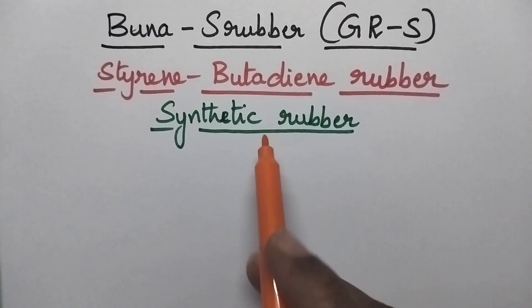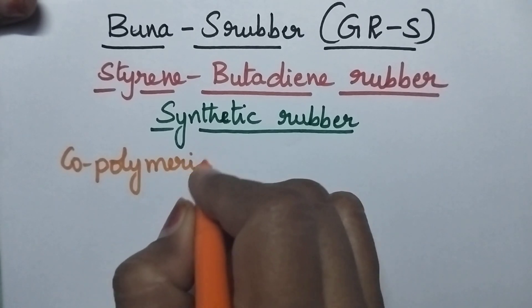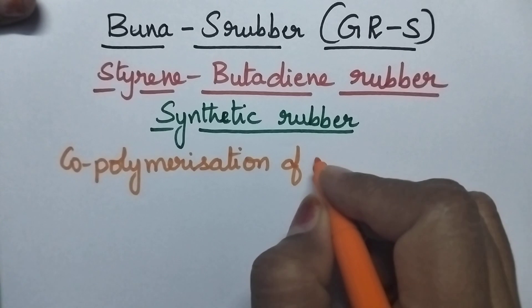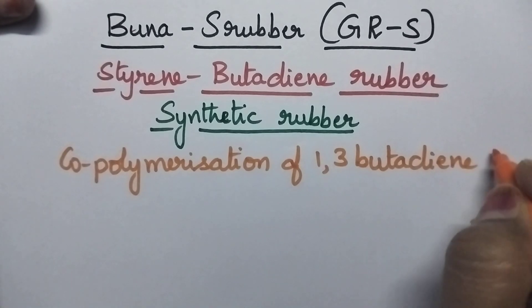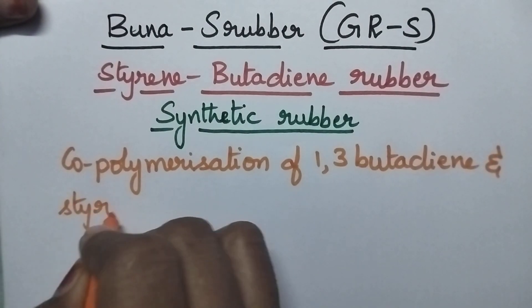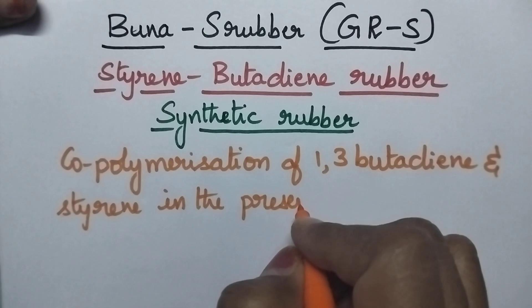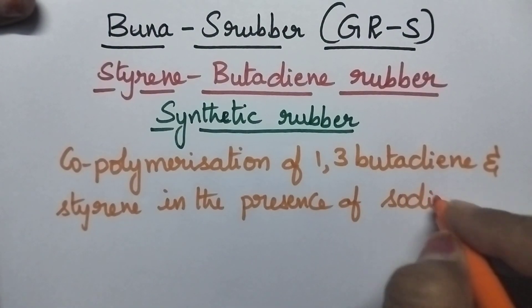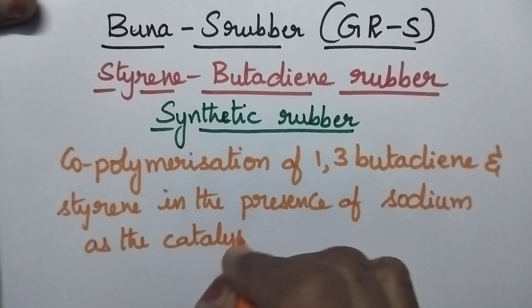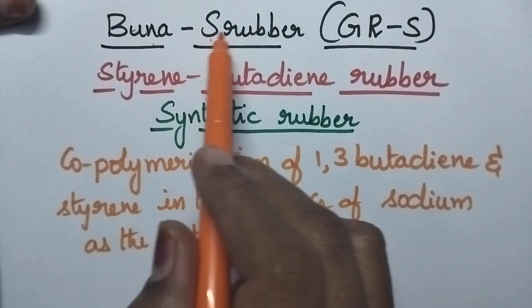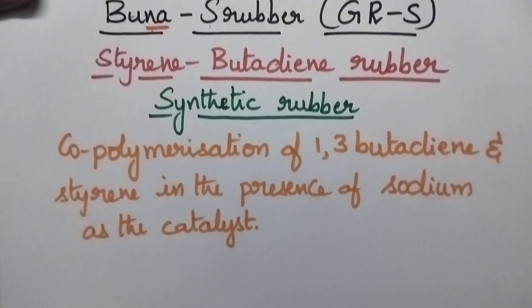Buna S rubber can be prepared by the copolymerization of 1,3-butadiene and styrene in the presence of sodium as the catalyst. In Buna S rubber, 'BU' stands for butadiene, 'NA' stands for sodium which is used as the catalyst.